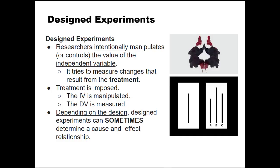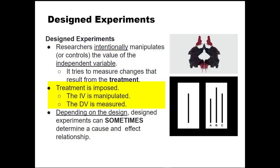A study is a designed experiment if the researcher intentionally manipulates or controls the value or effect of the independent variable. As in all studies, the dependent variable is measured. In a designed experiment, the researcher is trying to measure changes that result from the treatment. The researcher actually gets involved in the study — they're causing something to happen. The independent variable is manipulated and the dependent variable is measured. Depending on the design, designed experiments can sometimes determine a cause-and-effect relationship.